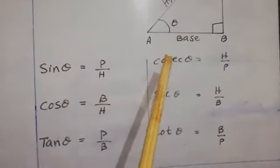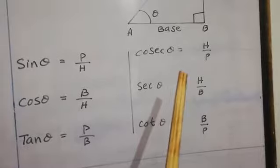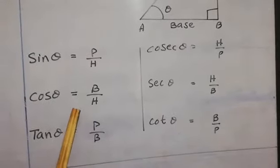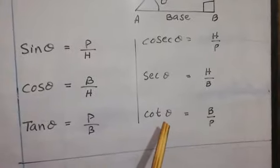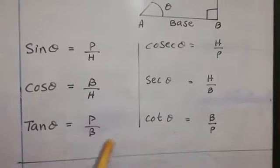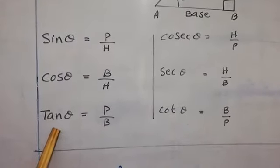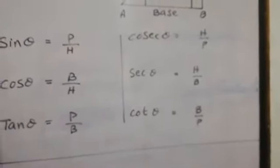Cosecant theta is the inverse of sin theta and it is hypotenuse by perpendicular. Secant theta is the inverse of cos theta — this is hypotenuse by base. And cot theta is the inverse of tan theta; tan theta is also known as tangent theta. Cot theta is equal to base over perpendicular. These are the trigonometric ratios or trigonometric functions.